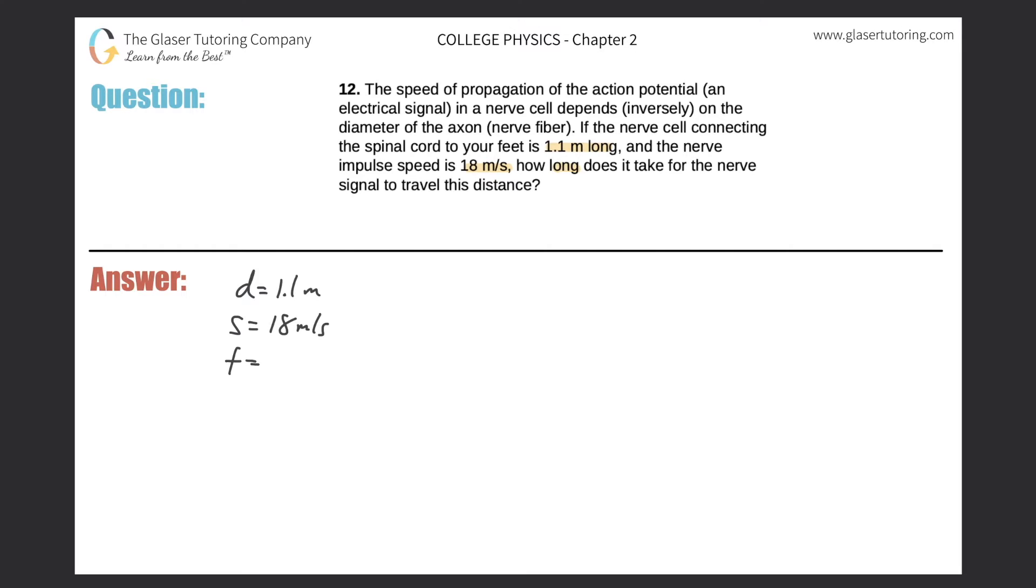Do you know a mathematical relationship between these three variables? We do. We know that speed equals the distance an object travels divided by the time it takes for the object to travel that distance.